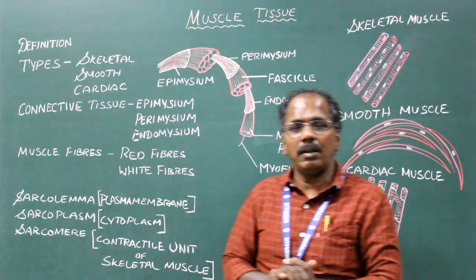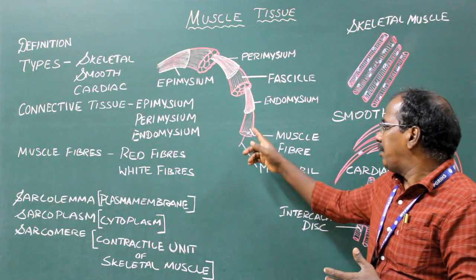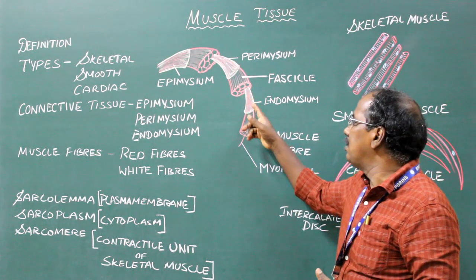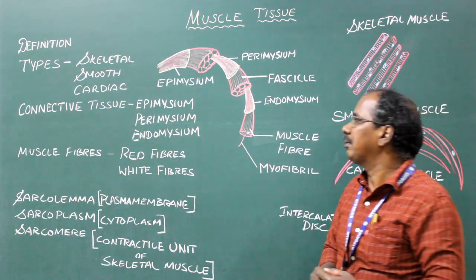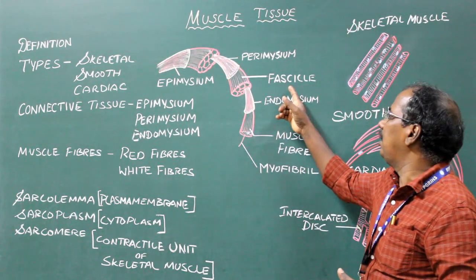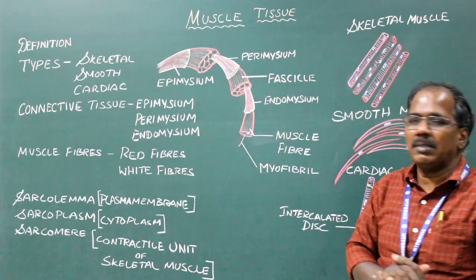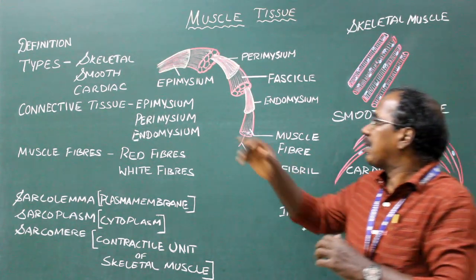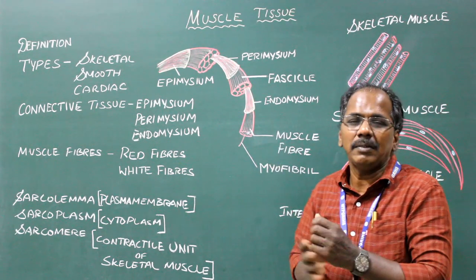Connective tissue of the muscle. Each muscle fiber is surrounded by a delicate connective tissue known as endomysium. The entire muscle is covered by dense connective tissue known as epimysium. This is the connective tissue covering of the muscle.